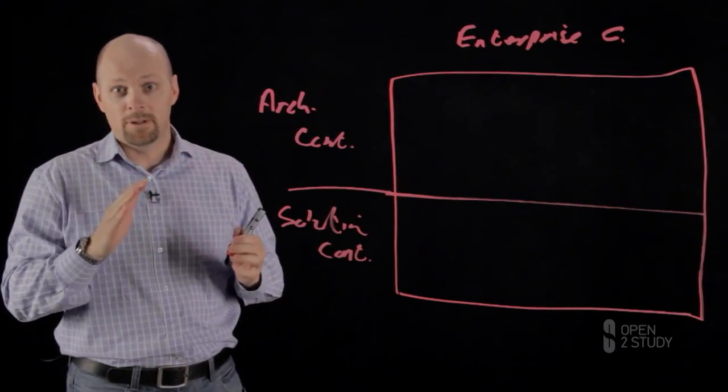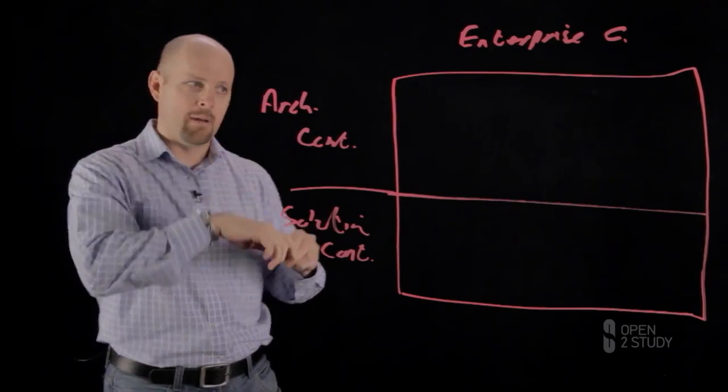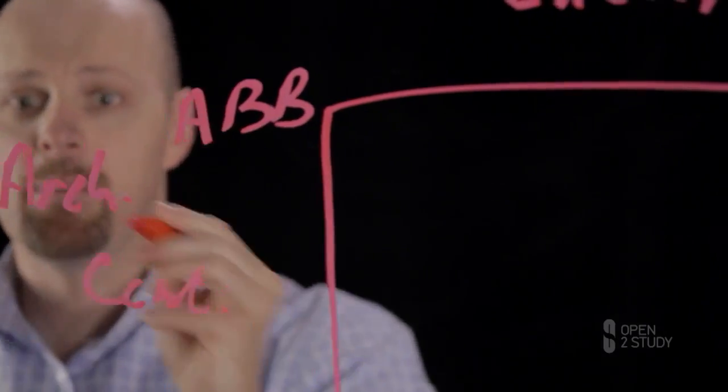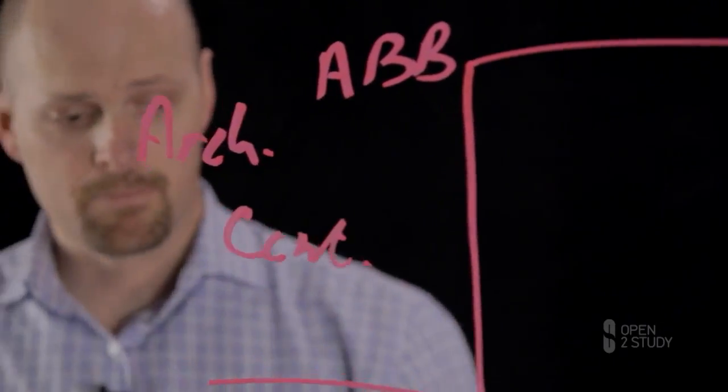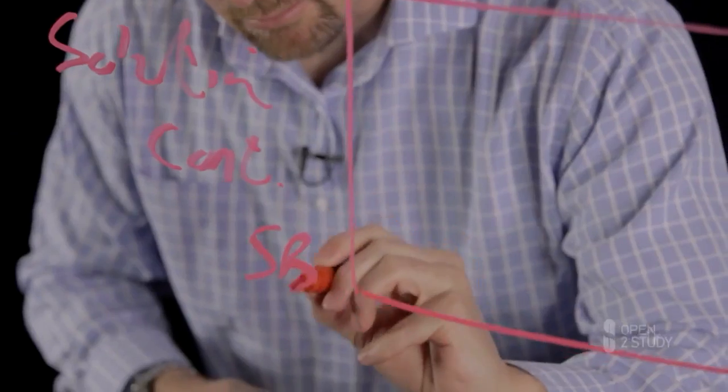So when we refer to building blocks, TOGAF breaks those building blocks into two categories. Up top here are all of your architecture building blocks because they belong in the architecture continuum. And down here we have what we refer to as solution building blocks.